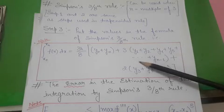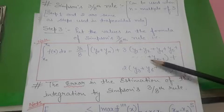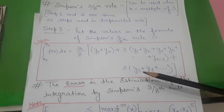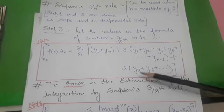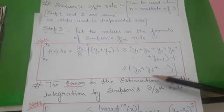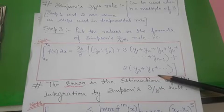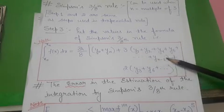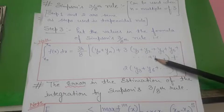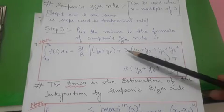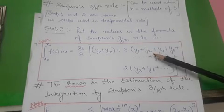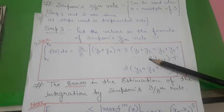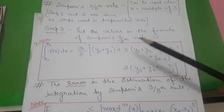Then you add 3 multiplied by the sum of all y values that are not multiples of 3 in their index — meaning you add and multiply by 3 for y1, y2, y4, y5, and so on, leaving out the terms at indices that are multiples of 3.